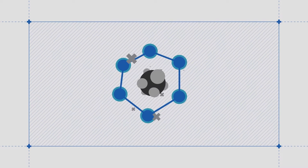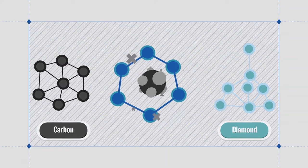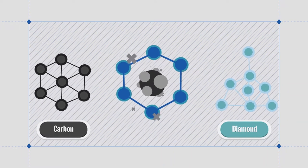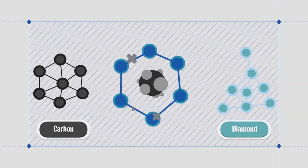Graphene is an allotrope of carbon. It means that graphene has a similar chemical element with carbon and diamond, but in different form. In simple words, they are family.